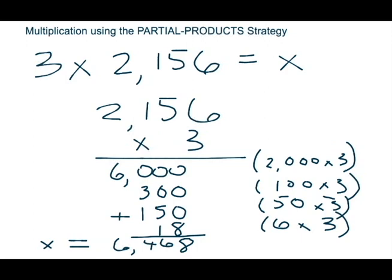I just wanted to add one more thing before moving on to another problem using this same strategy. The order of your partial products is not important, although it is important that no partial products be omitted. For me it's easier to keep track starting with the largest digit — in this case it was the 2 because it's in the thousands place. If you'd rather start with the 6 you can do that and move over to the left. As long as you are using the values of each of those digits when multiplying and you have all of them included, you will get the same answer.